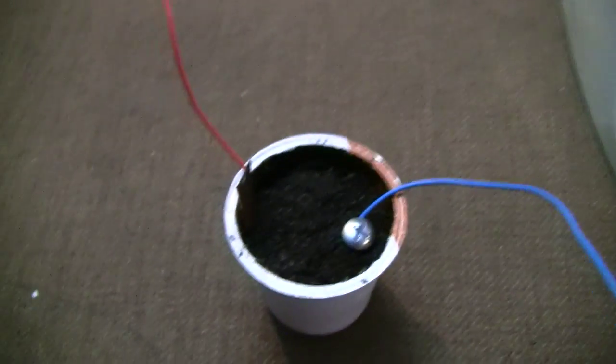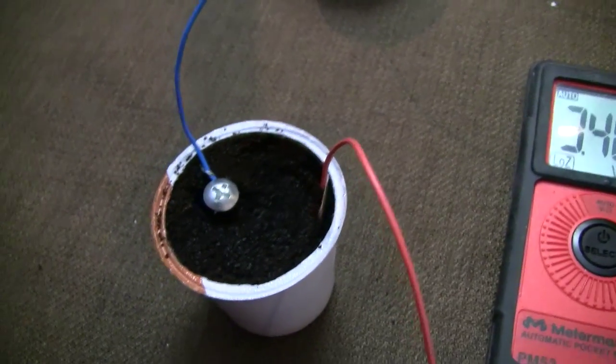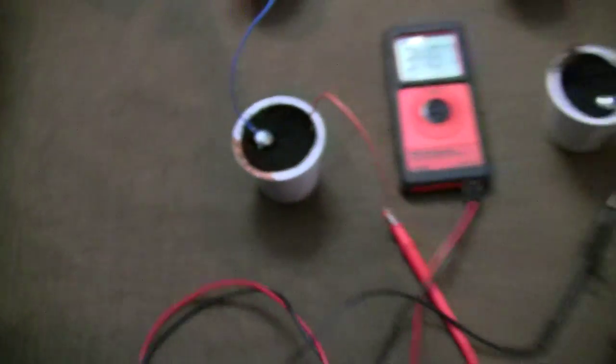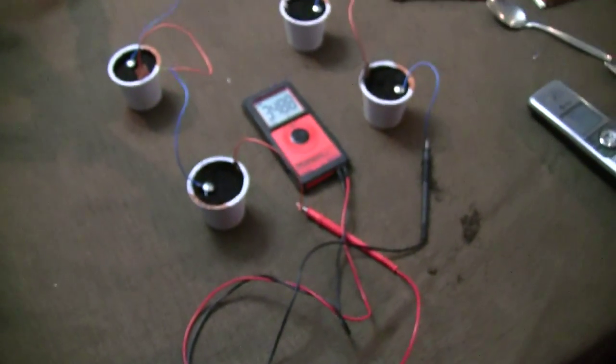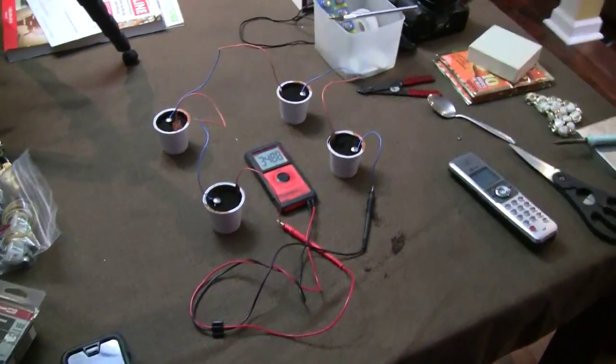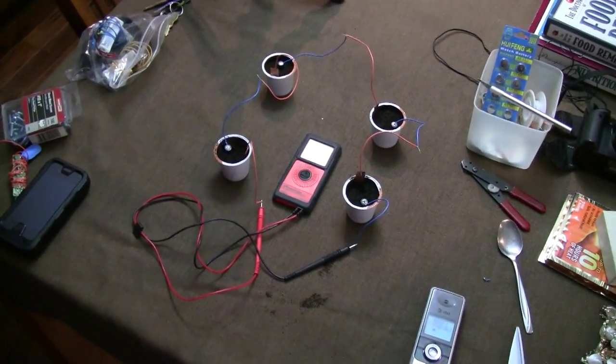So I create a cathode and an anode in each coffee pot. Now, if I was to do this with my week's worth of coffee pots, my K-cups, I would actually have 21 volts.